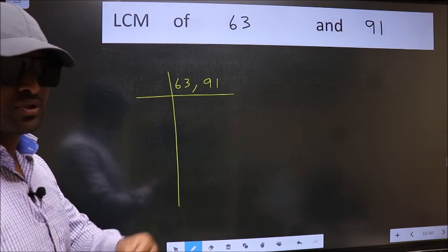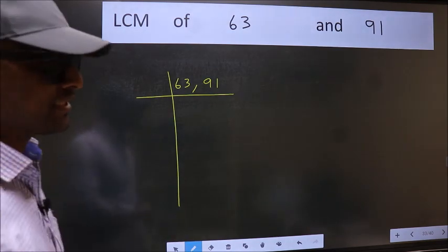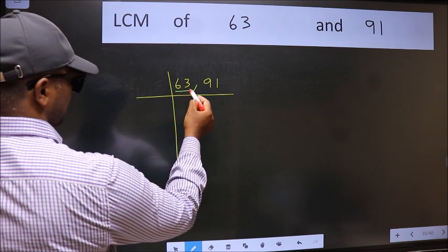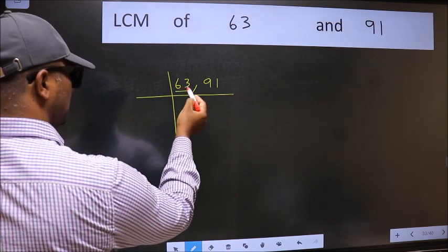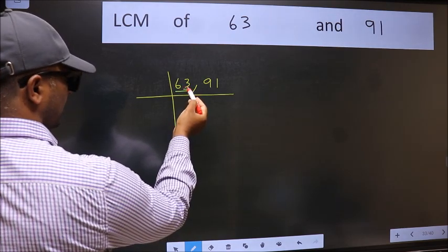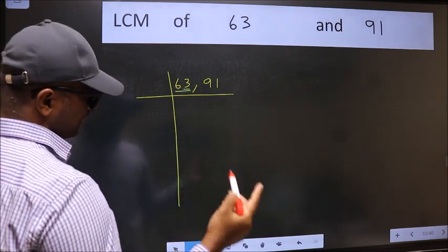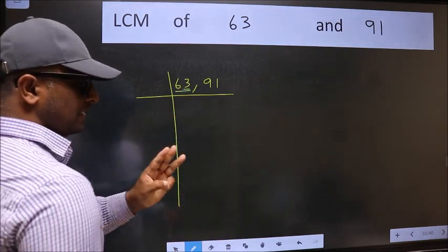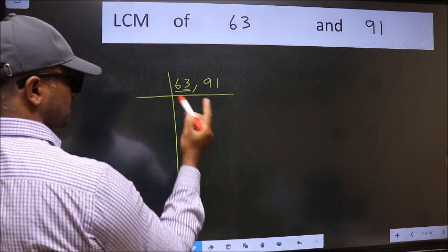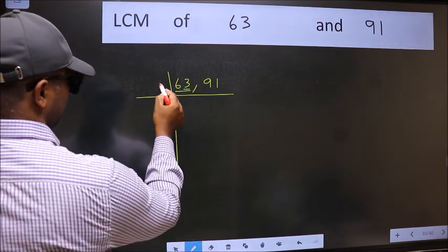Now you should focus on the first number which is 63. In this number, last digit 3, not even. So this number is not divisible by 2. Next prime number 3. This number is divisible by 3. So take 3 here.